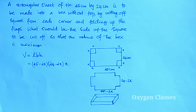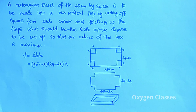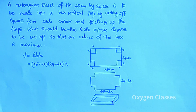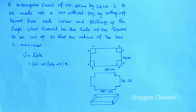We find dV/dx and set it equal to zero to find the critical points. Then we apply the second derivative test: if the second derivative at the critical point is less than zero, we have a maximum value.